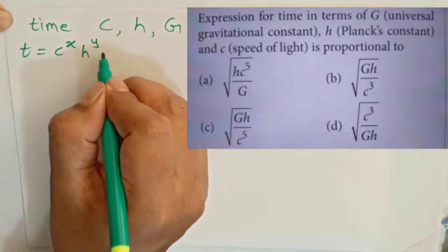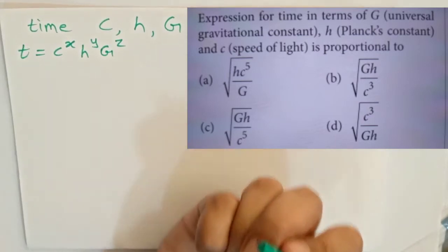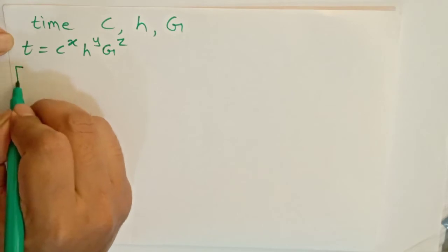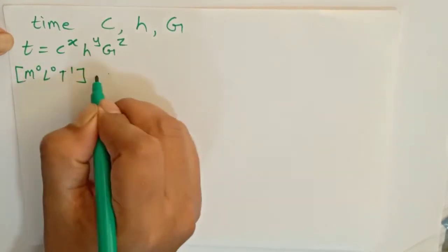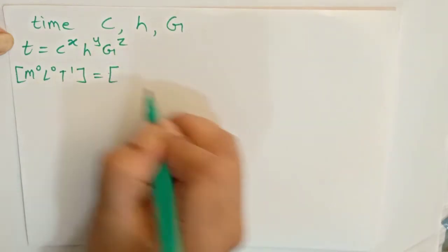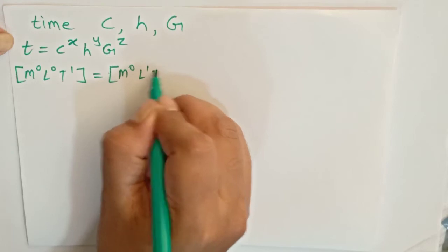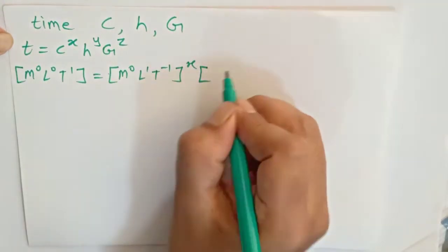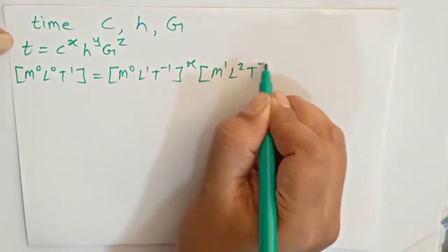Dimensional equation for t is M^0 L^0 T^1. Speed of light c is given by M^0 L^1 T^-1. Planck's constant h has dimensional equation M^1 L^2 T^-1, and gravitational constant G is M^-1 L^3 T^-2.